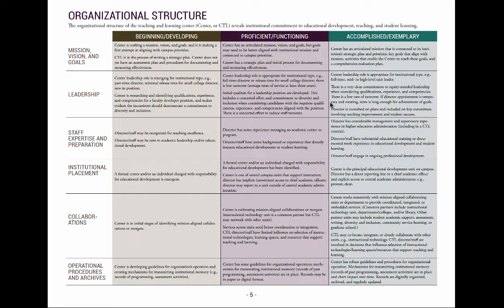Provosts, deans, and other academic leaders can use the matrix to develop a new teaching and learning center aligned with an institutional mission, or to examine structure that contributes to institutional teaching and learning goals. It also can be used to support an existing center for teaching and learning for the purpose of highlighting the importance of teaching and learning on campus and assessing whether additional resources might be needed. And it might be used to assess the role and the impact of the center within the broader institutional context, with consideration of the institutional mission, continuous improvement, strategic planning, and accreditation.